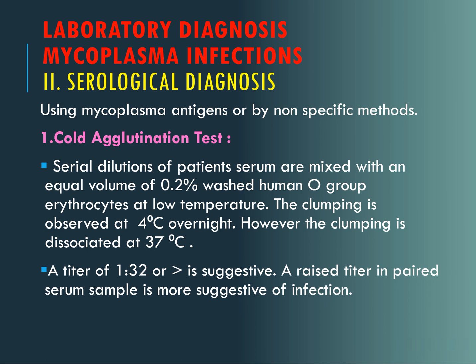Serological methods are usually used for the diagnosis of mycoplasma infections because culture takes a lot of time. The patient's serum is checked for the appearance of antibodies against mycoplasma antigens by nonspecific methods. The first approach is the cold agglutination test, in which the patient's serum is mixed with an equal amount of 0.2% washed human RBCs of blood group O and incubated at low temperature. Clumping is seen at low temperature — 4 degrees Celsius — but not at 37 degrees Celsius.